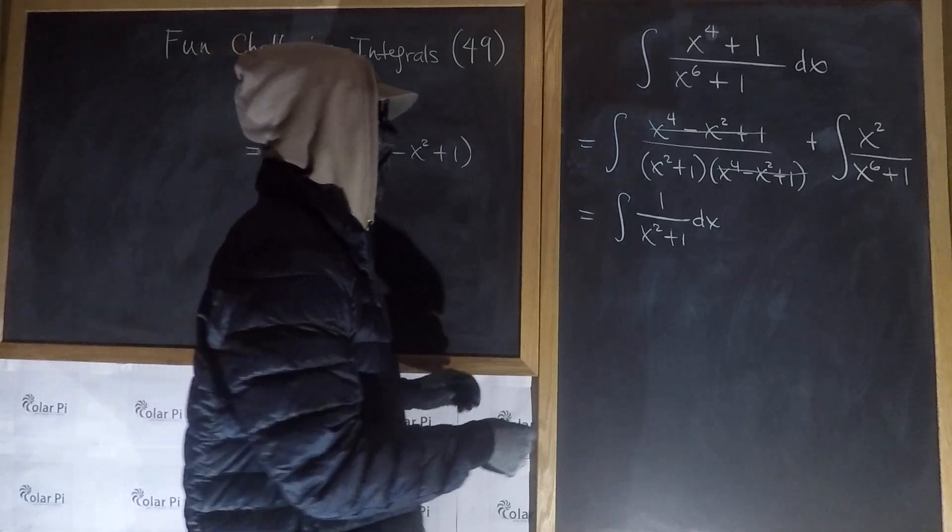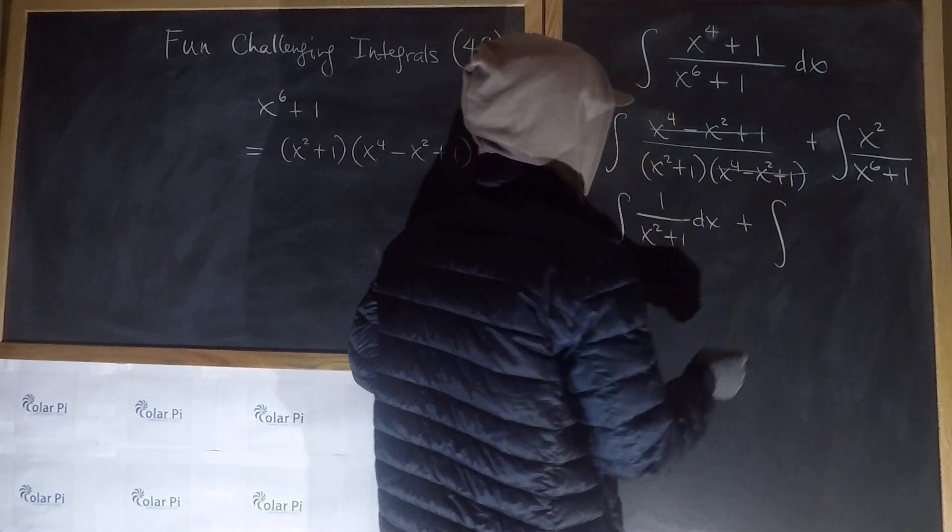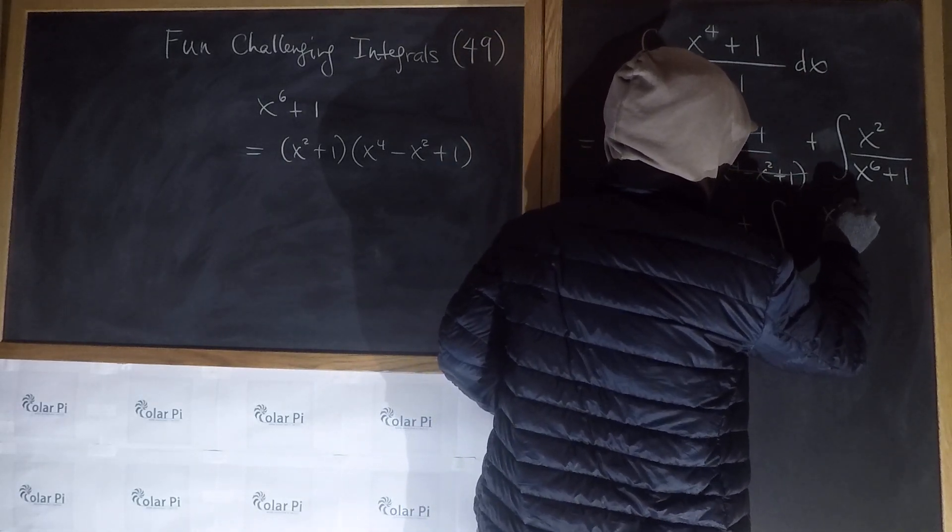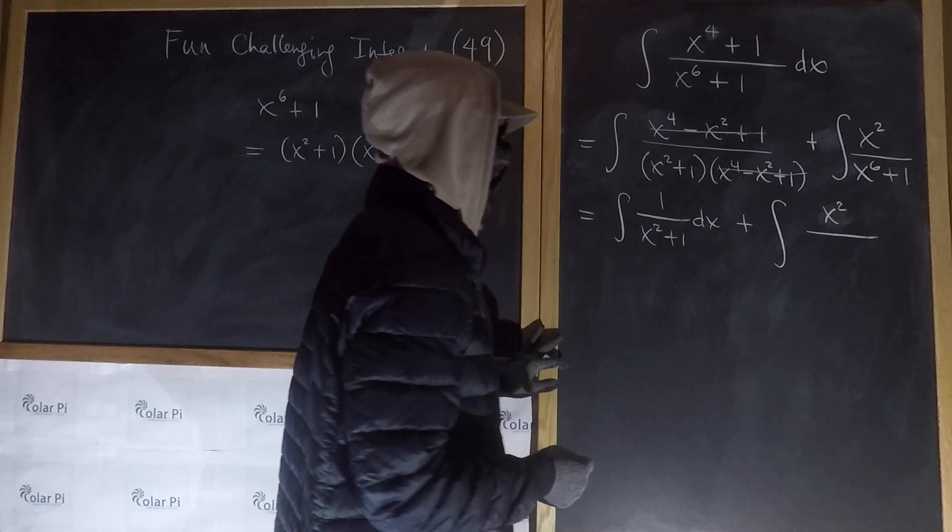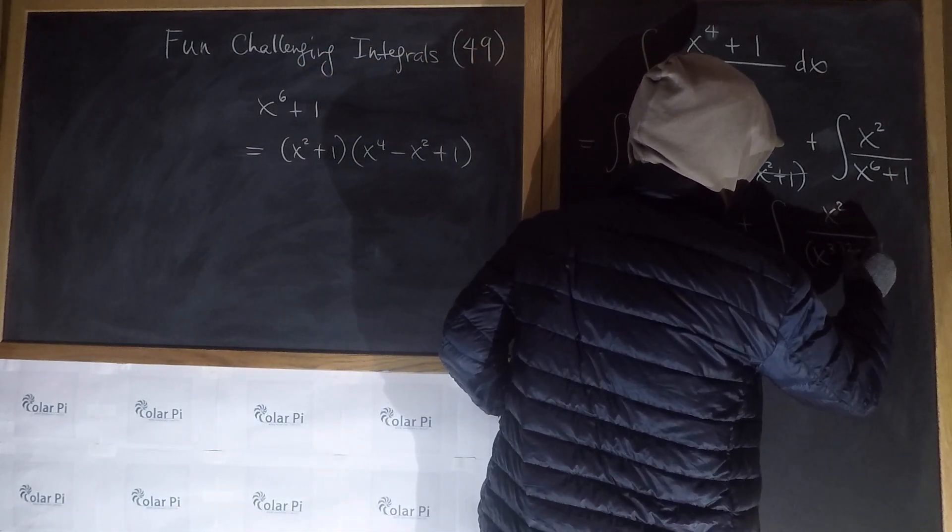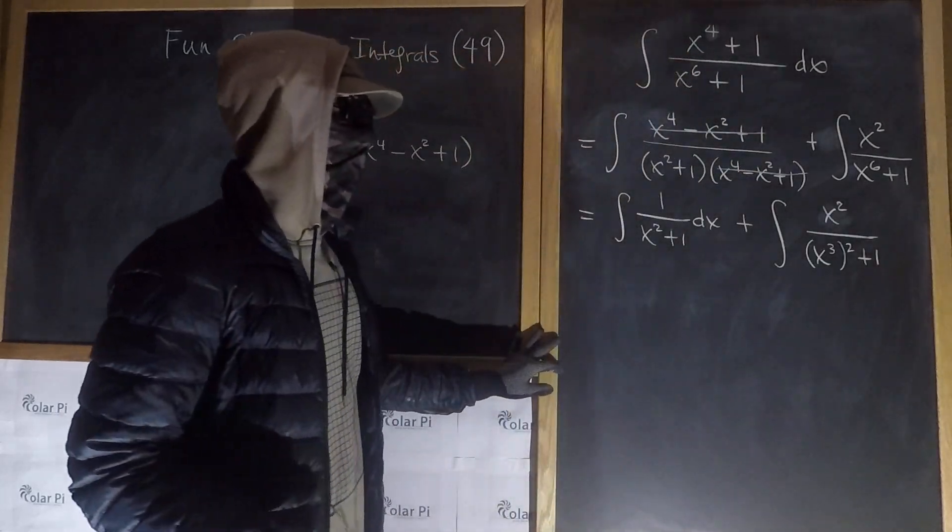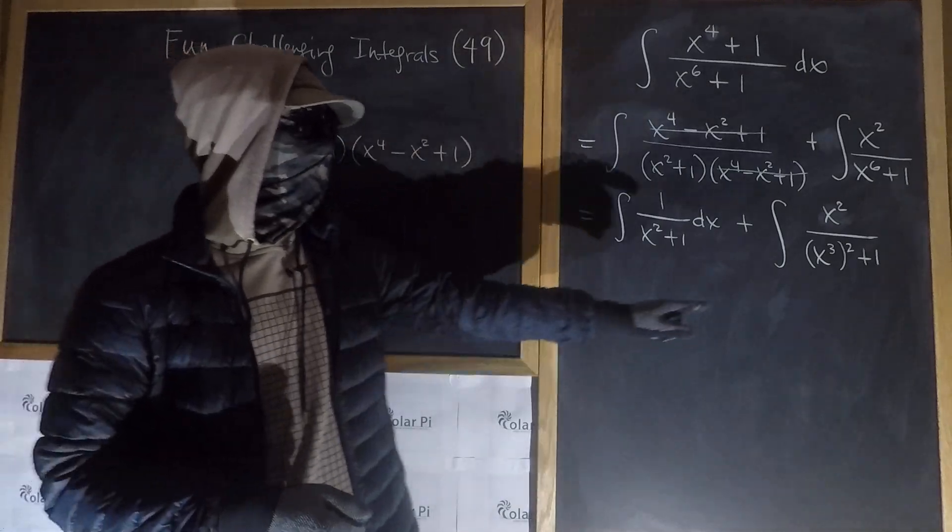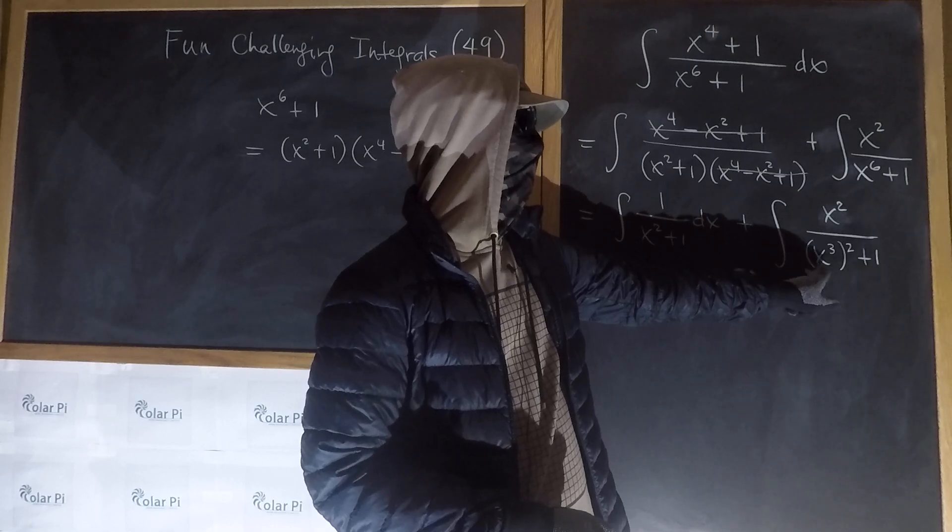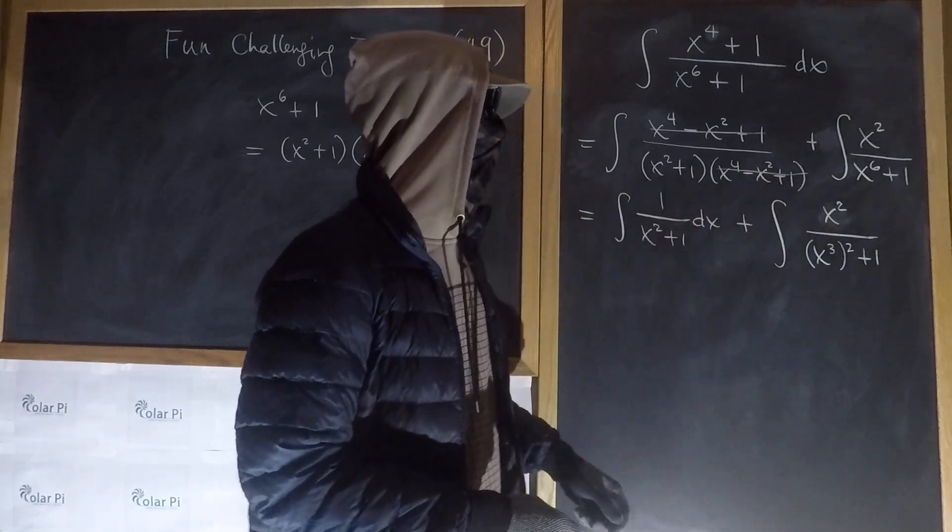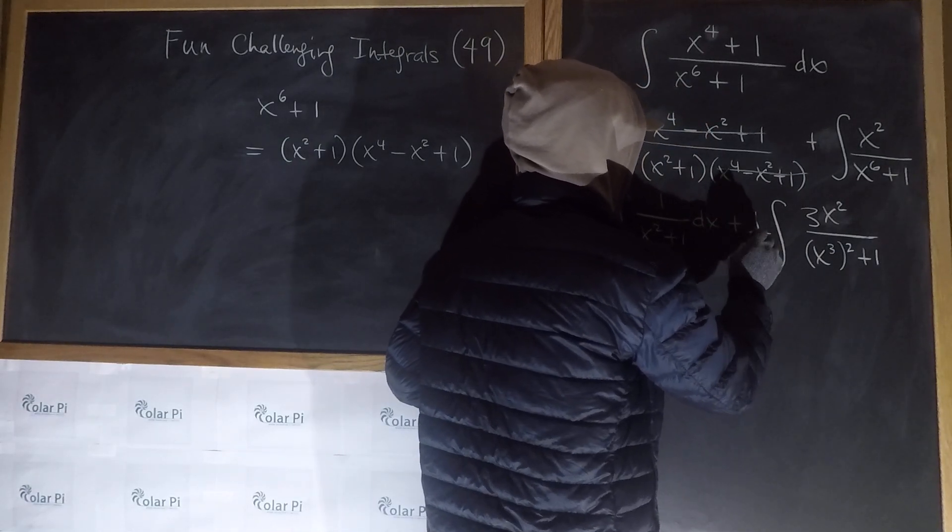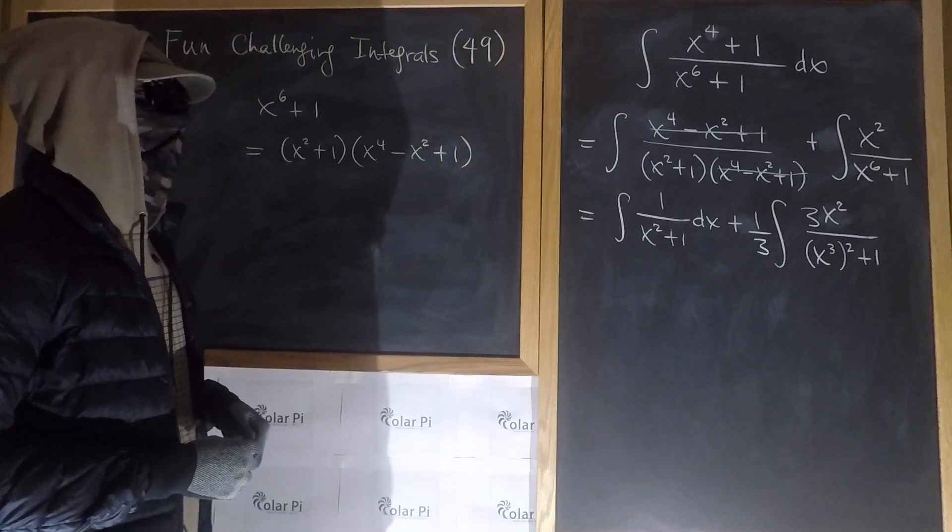And for the second guy we can do something nice, which is write first x squared in the numerator. And in the denominator we're going to write x cubed squared plus 1, and that's the same as x to the 6th plus 1. And now if we let u equal x cubed then du is going to be 3x squared. So that x squared is only missing a 3. So we throw a 3 there, and then make up for it by throwing a 1 third in front of the integral.